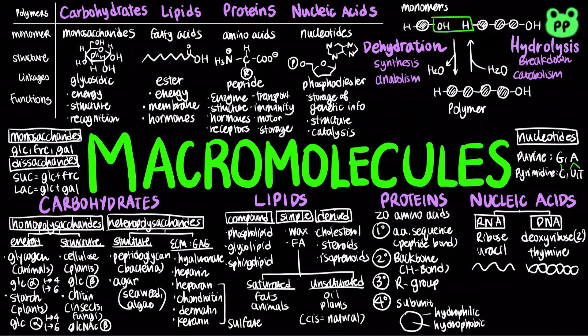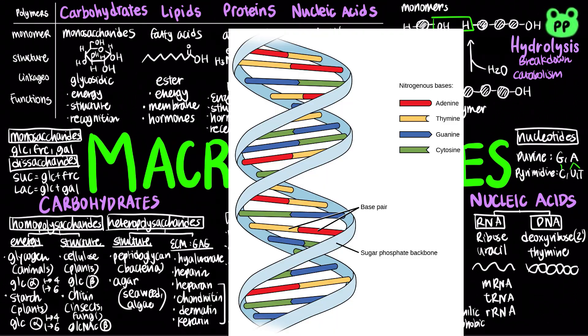There are three main types of RNAs: messenger RNA, transfer RNA, and ribosomal RNA, which are involved in transcription and translation. The DNA structure involves an anti-parallel double helix.